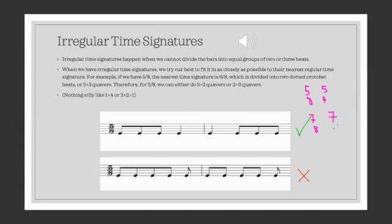So there's not really like a specific grouping for them. So like five quavers or five crotchets in a bar, seven quavers, seven crotchets in a bar. Although there are not specific rules for them, we have to make them make sense in the best way possible.